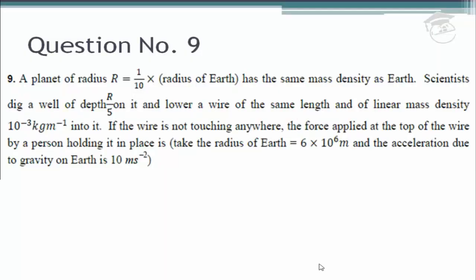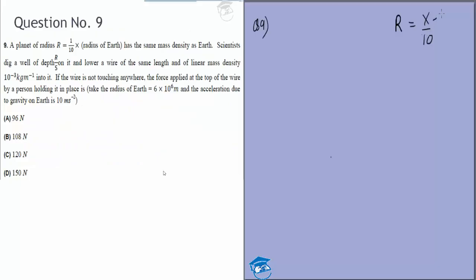Question 9. We are given a planet has a radius r which is x by 10, where x is the radius of the Earth, generally denoted by r_e, and the same mass density.